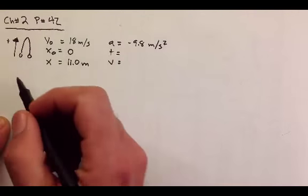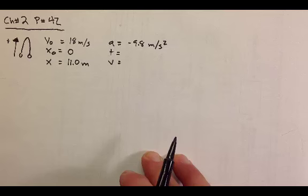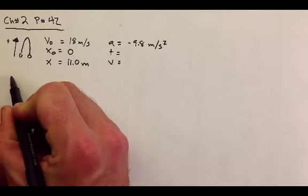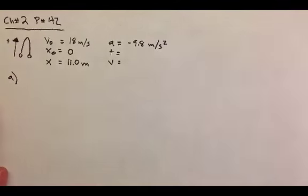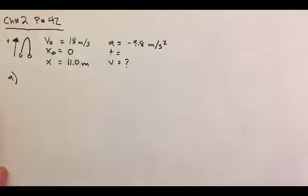And then part A asks, what is, how fast is it moving when it reaches a height of 11 meters? So that is part A, and let's solve that next. So we want to know what the final speed, V, is there.